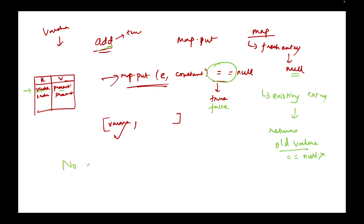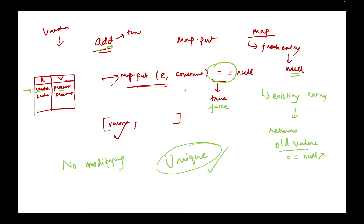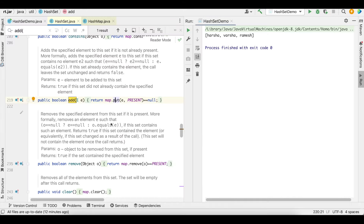Basically no modification is happening to the map, because I am adding the same key again into the HashMap and the value is also unchanged — same key, same value, no changes to the HashMap. If nothing has changed in the HashMap, nothing is added to the set. Because of this entire mechanism, we are able to guarantee the unique feature of the set. No two duplicate entries will be entered into the set because of this condition.